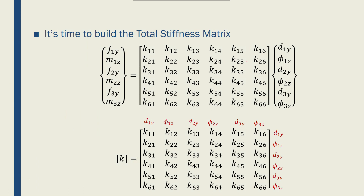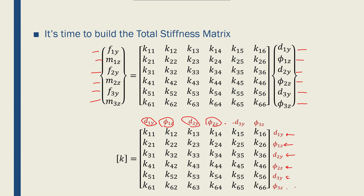Now we have the 6x6 global matrix to fill in, with six global forces and six global displacements. On top of each column I've written its corresponding displacement: d1y, phi1z, d2y, phi2z, and so on. Next to each row is its corresponding force element. We will populate this 6x6 global stiffness matrix using the local stiffness matrices found earlier.